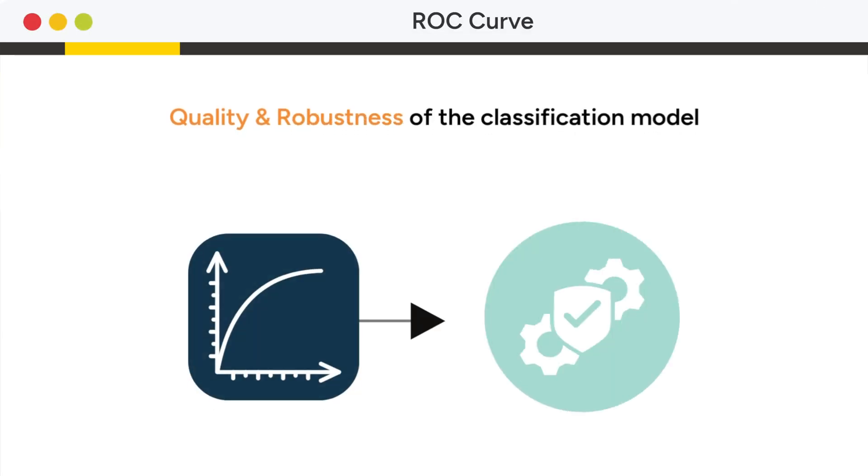The ROC Curve shows the quality and robustness of the classification model as defined by the false positive rate and the true positive rate. Or in other words, sensitivity and 1 minus specificity.